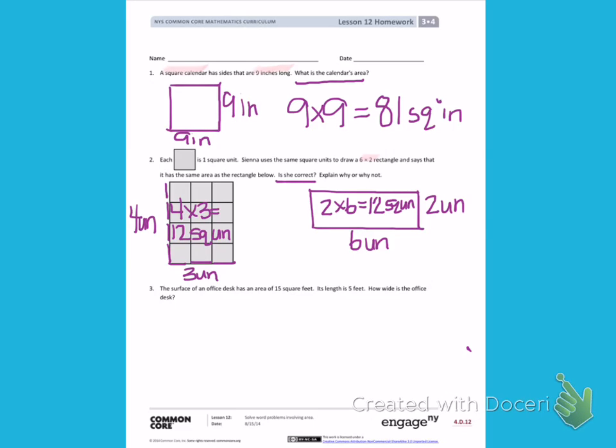So looking back at the question, is she correct? Do these two rectangles have the same area? Well, we have an area of 12 square units and an area of 12 square units. So yes, she is correct because both 4 times 3 and 6 times 2 equal 12.